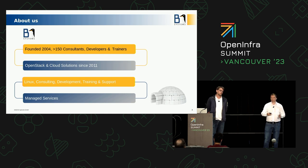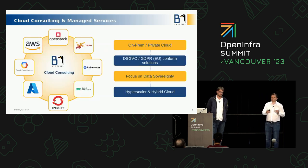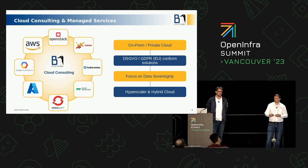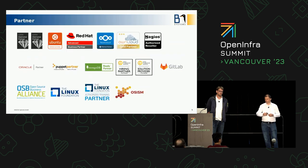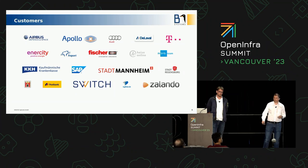We have several models: one model is to do it permanently; the other model is to do it just for a certain amount of time and then hand it over to the customer, doing trainings and things like that. We are not just doing OpenStack — we are also doing other cloud solutions such as Kubernetes, SUSE Rancher, and OpenShift. We also have people certified for the big hyperscalers and a broad portfolio of customers in various industries.